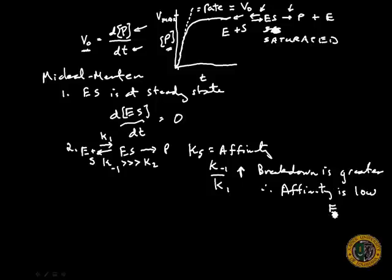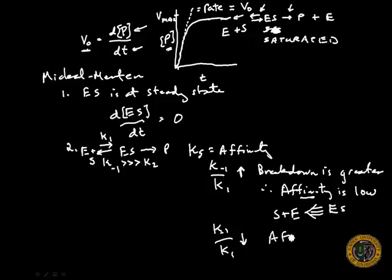Because if I draw it like this with a big arrow, our enzyme-substrate complex tends to want to separate after it forms. So we have a low affinity for enzyme-substrate. The opposite is if our K-1 over K1 is low, that means our denominator is large, and so affinity is high.